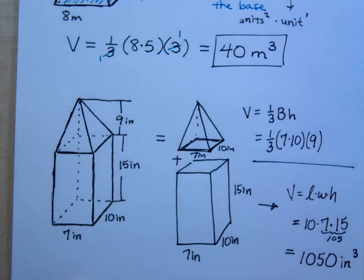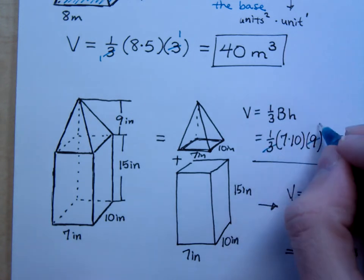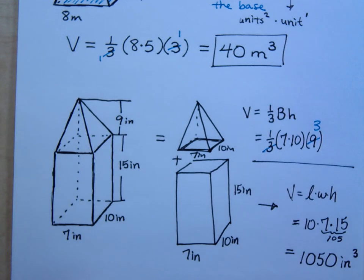Is there any reducing that I can do here? So, 3 goes into 9 3 times? Now, I have to multiply 7 times 10 times 3. Make your life easy. What is it? Do 7 times 3 first. 21. And then 21 times 10 is what? 21 times 10 is 210.